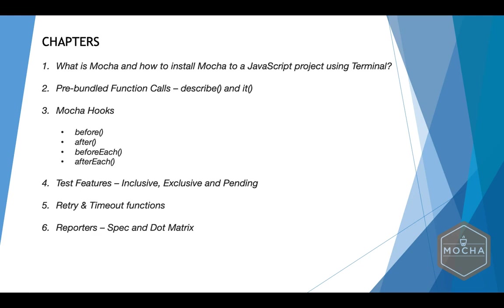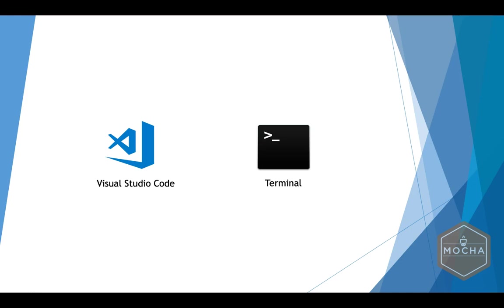Last but not least, we will be learning about the different types of reporters generated by Mocha like spec and dot matrix. We will be using Visual Studio Code as the IDE and terminal for console programming. Of course, you can use the IDE of your own choice as well. Now let's get started.